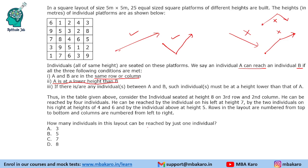How many individuals in this layout can be reached by just one individual? Before solving, one basic logic to keep in mind: if a person has a high height, more individuals can reach them; if a person is at a low height, fewer people can reach them. We can eliminate people with height 1 — no one can reach them. And if a person has height 9, obviously all neighboring people will be able to reach them.